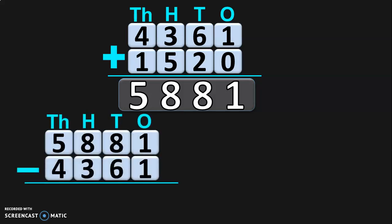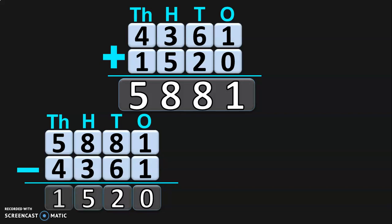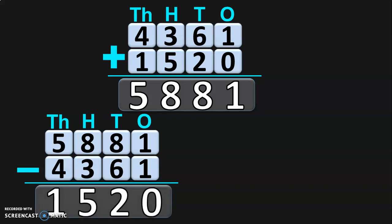Now, what will happen if we take away 4361 from 5881? Write down the place values and begin the subtraction from the 1s place. 1 minus 1 in the 1s place is 0. In the 10s place, 8 minus 6 is 2. In the 100s place, 8 minus 3 is 5. And in the 1000s place, 5 minus 4 is 1. So you get the other number 1520 when we subtract 4361 from 5881.